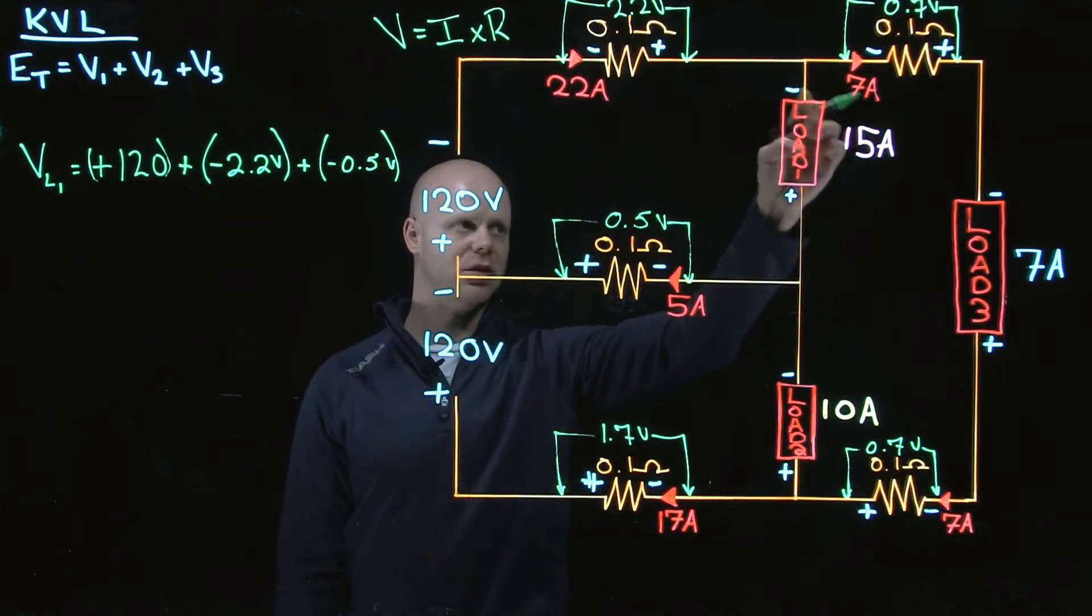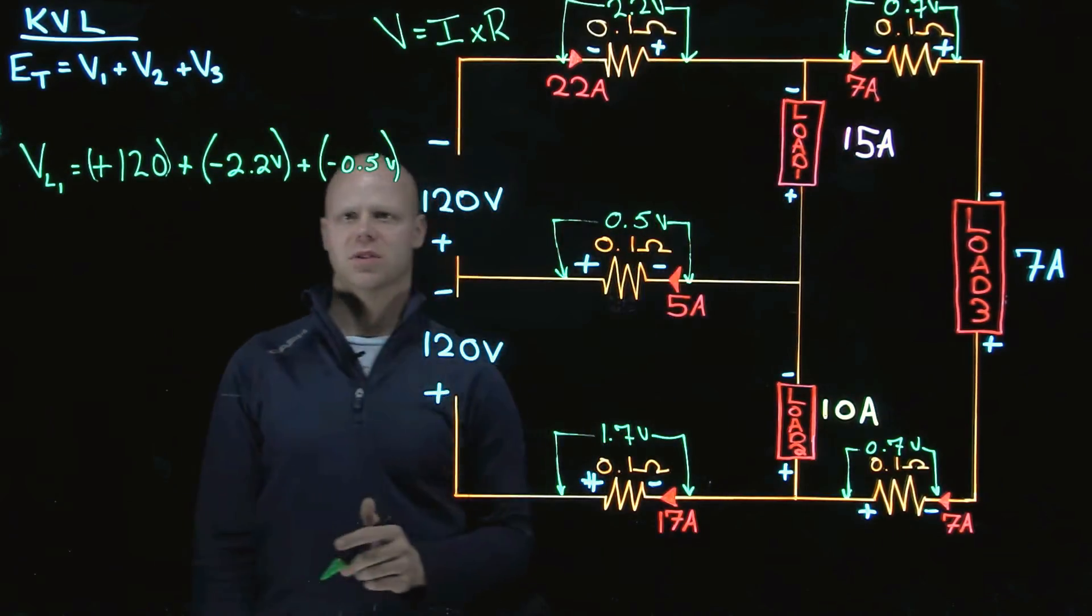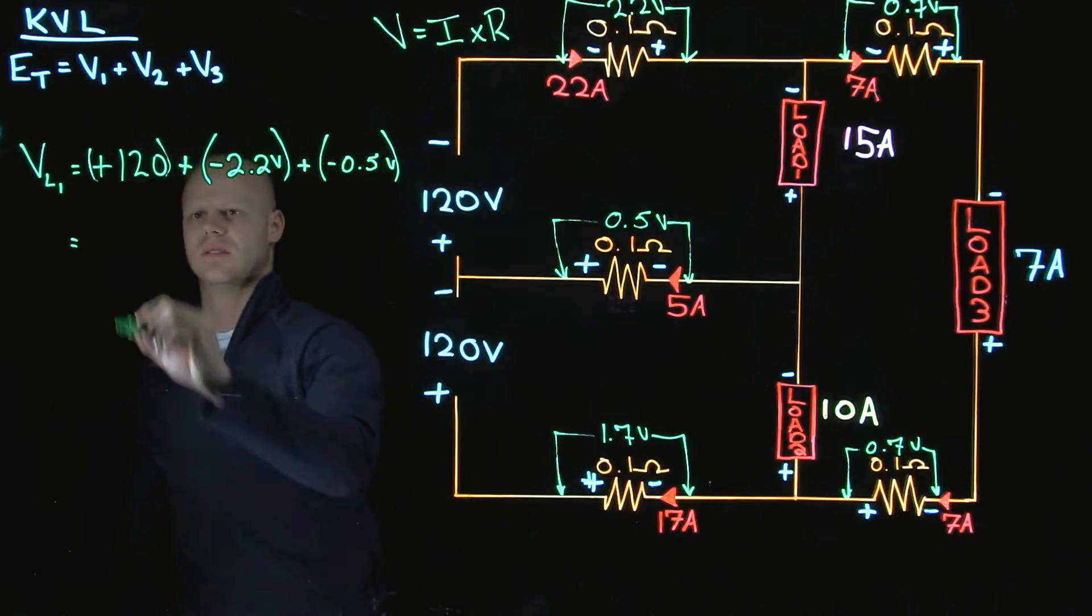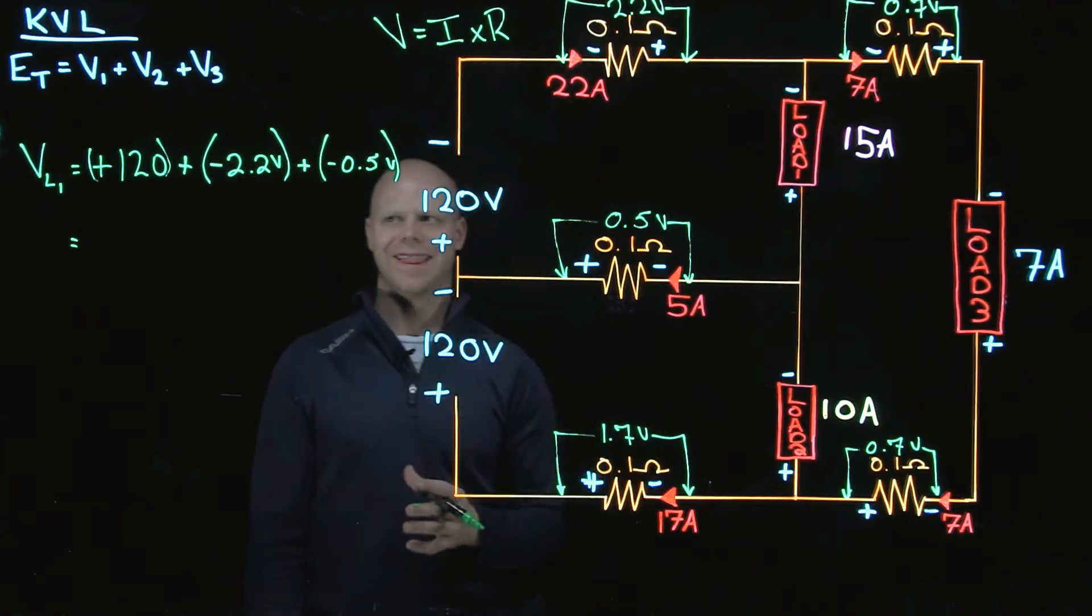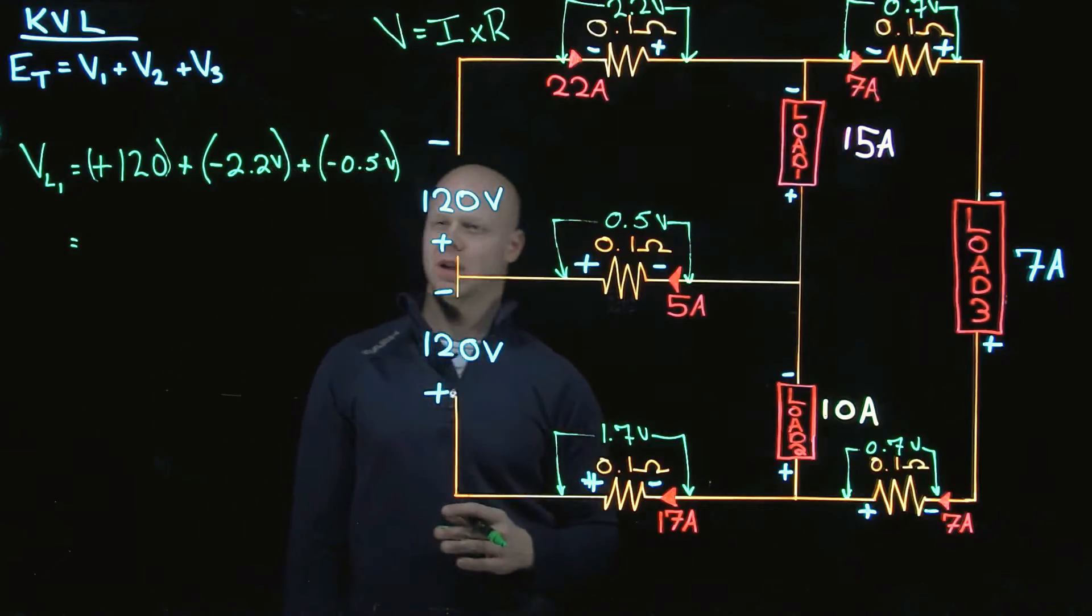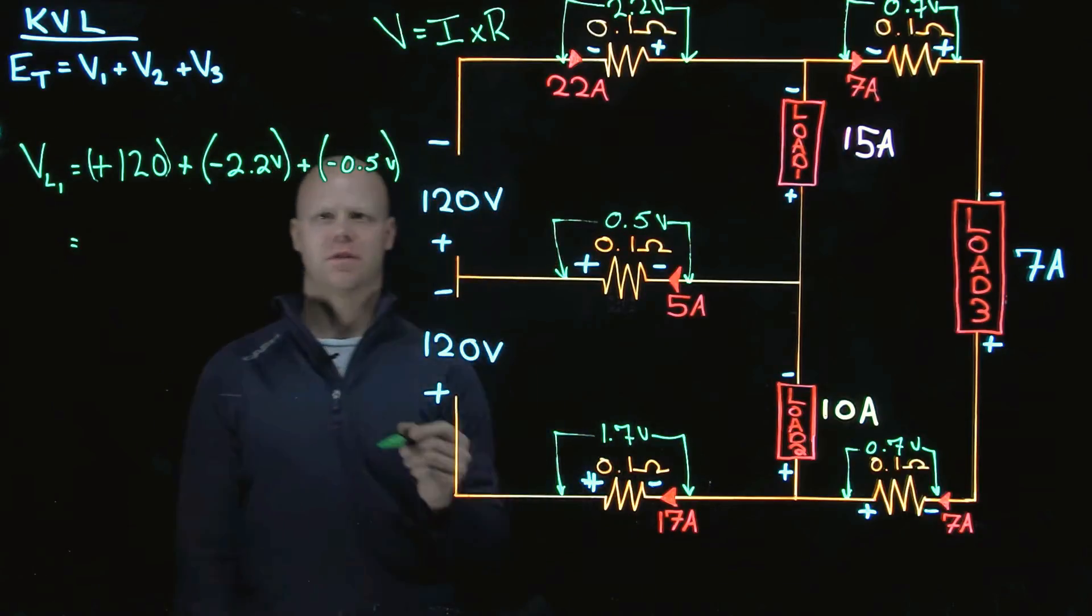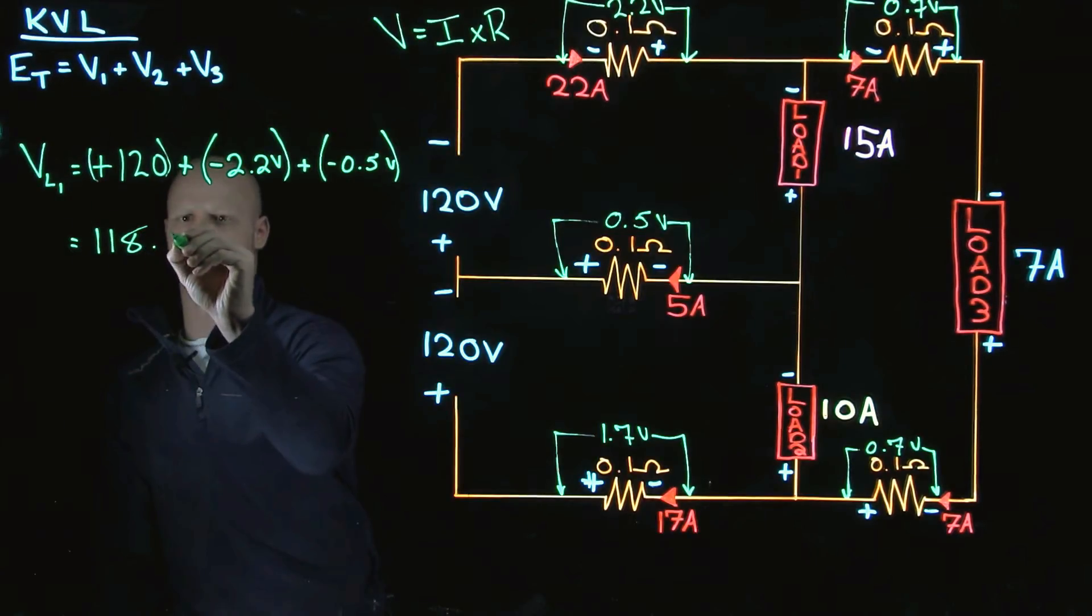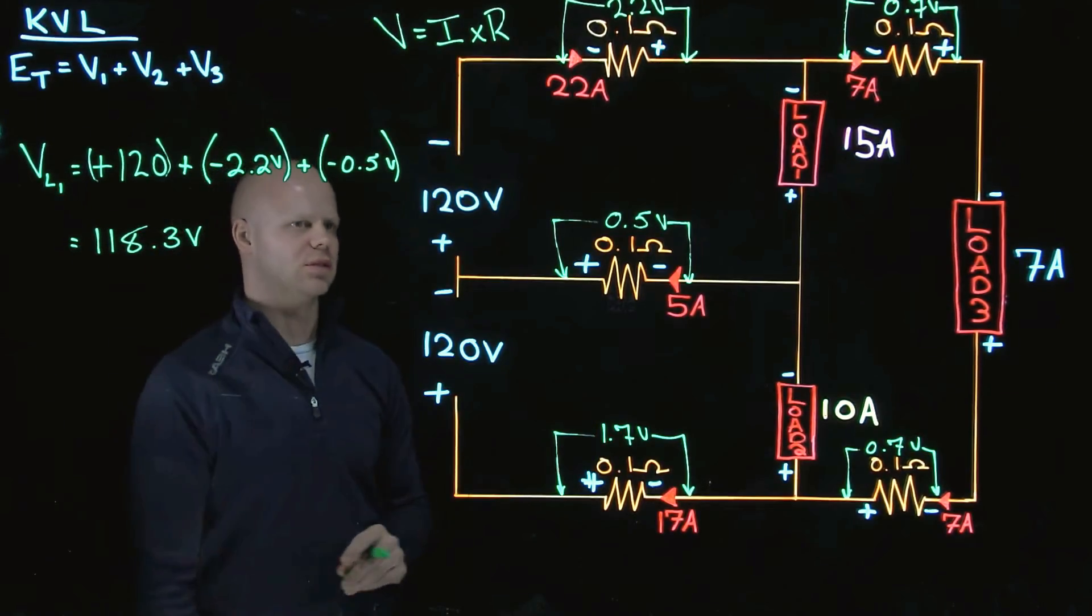And this is what I am going to use, and this is how I am going to solve for what that voltage actually is. So what do I do? 120 plus a negative 2.2 plus a negative 0.5, I should come up with 118.3 volts.